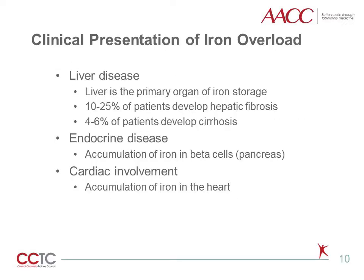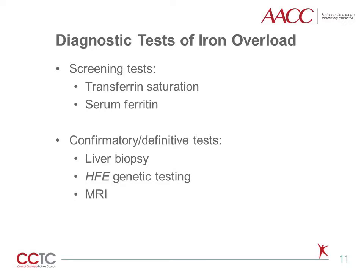Now let's talk about the clinical symptoms of iron overload disorders. A variety of symptoms and signs can be caused by iron deposition in different organs. As a primary organ of iron storage, the liver is frequently involved in iron overload. It's estimated that 10 to 25 percent of patients develop hepatic fibrosis, whereas 4 to 6 percent progress to cirrhosis. Other common organs involved include the pancreas, and specifically beta cells, which can lead to diabetes, and the heart, which can lead to arrhythmias and heart failure. The symptoms of iron overload are rather nonspecific; therefore, laboratory tests are important for the early diagnosis of iron overload.